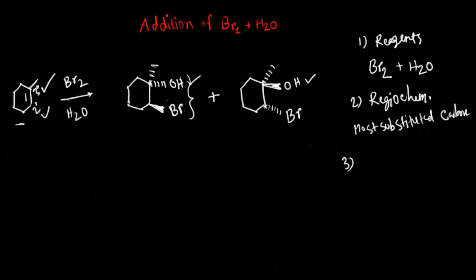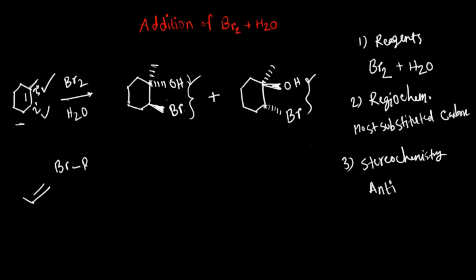The last point is the stereochemistry, and the stereochemistry is that these two groups will add across the double bond via anti addition. Now all of this can be explored through the mechanism, so let's talk about the mechanism. For an alkene in absence of water, the pi bond attacks the bromine atom, leaving the electrons on the other bromine atom, and that bromine atom also attacks the double bond, forming a bromonium ion.